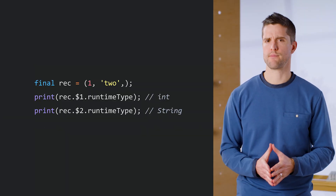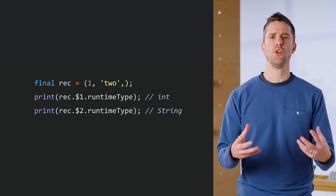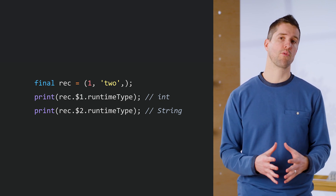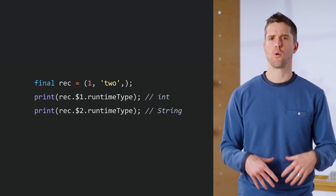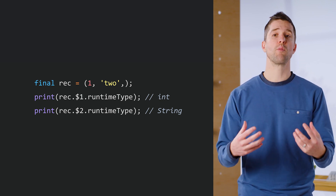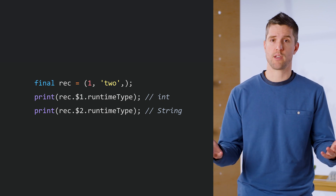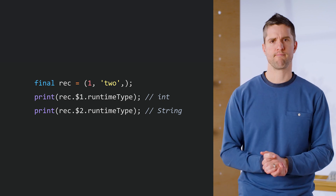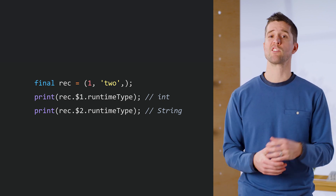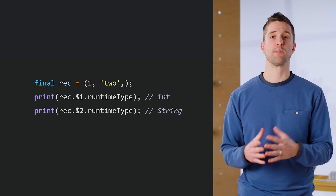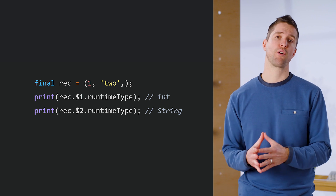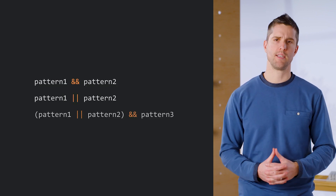A quick note on records: they're a new data type also added in Dart 3 alongside patterns. Records are an immutable collection of arbitrary objects declared with parentheses. Records can hold mixed data types and are type-safe on a per-item basis. Back to patterns — patterns can also be combined using logical operators like AND, OR, and parentheses.